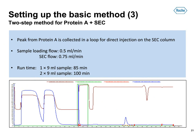After setting up the protein A method, we needed to make sure that the protein A peak was collected into a loop. Having done this successfully allowed us to combine the protein A step with the second purification step — the size exclusion. During initial tests, we did not look at optimizing run times. The flow rates used were 0.5 ml/min and 0.75 ml/min, resulting in a run time of 85 minutes for a single injection and 100 minutes for a double injection. The chromatogram shows nicely that we could find the protein A peak in the size exclusion after being eluted from the protein A and collected in the loop.